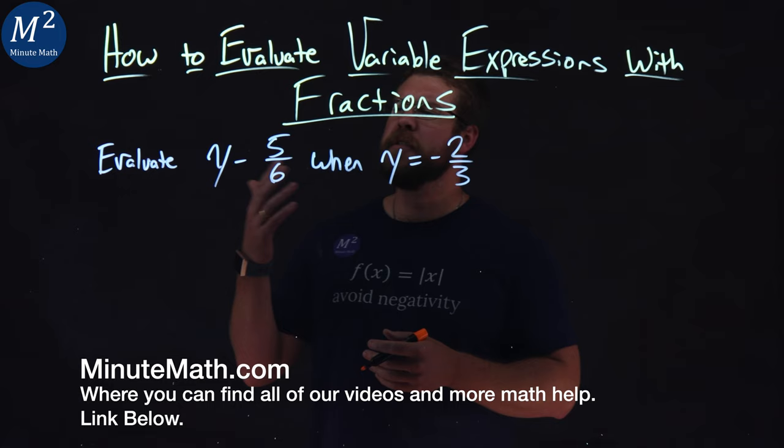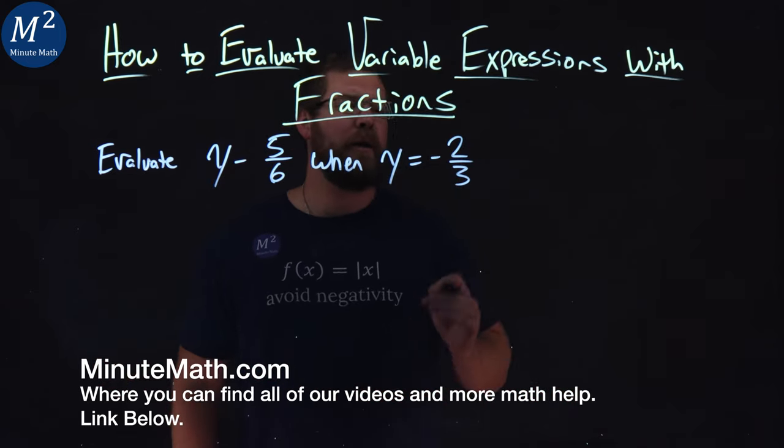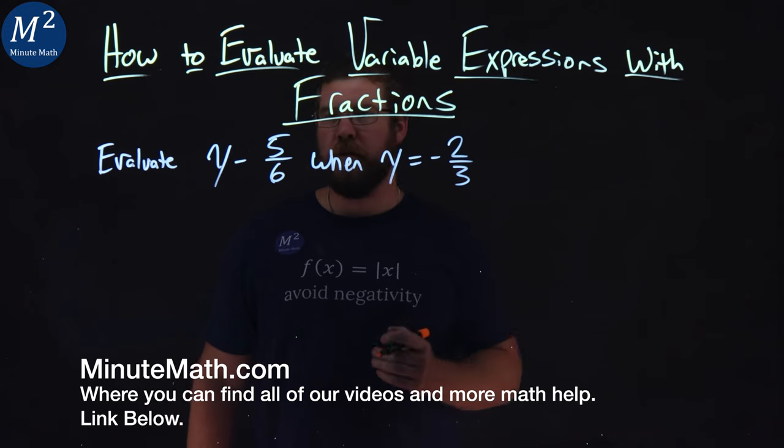We're given this problem right here. Evaluate y minus 5 sixths when y equals negative two-thirds.